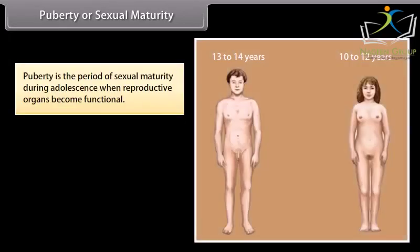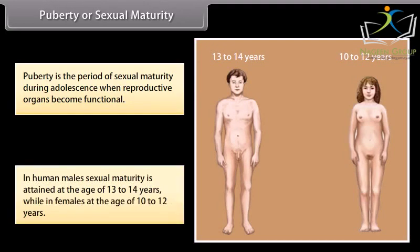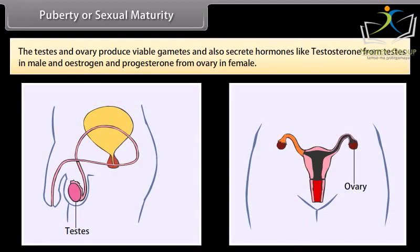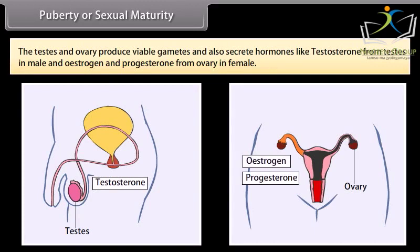Puberty is the period of sexual maturity during adolescence when reproductive organs become functional. In human males, sexual maturity is attained at the age of 13 to 14 years, while in females at the age of 10 to 12 years. The testes and ovaries produce viable gametes and also secrete hormones like testosterone from testes in males and estrogen and progesterone from ovaries in females.